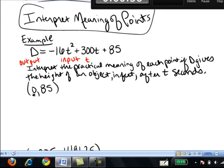So in this point, the input is 0. The input is a t value. The output is a d value. So now we know that this point represents 0 seconds, because 0 was a t value, and it means 85 feet high, because the 85 is an output d value.